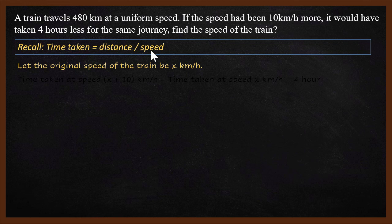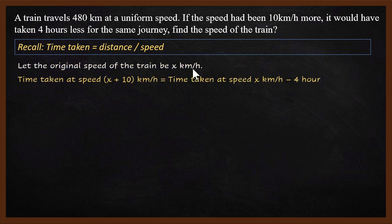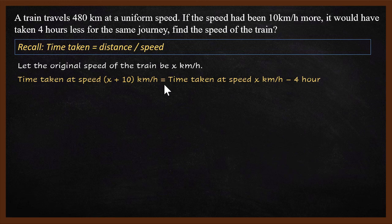What are we supposed to find? We are supposed to find the speed of the train. Let the original speed of the train be x km per hour. Time taken at speed x plus 10 km per hour equals time taken at speed x km per hour minus 4 hours.